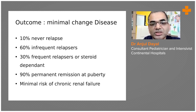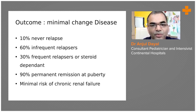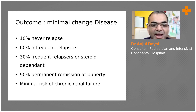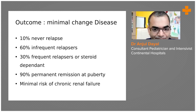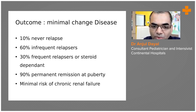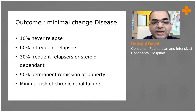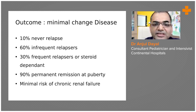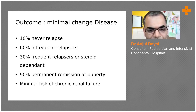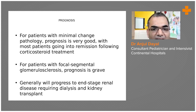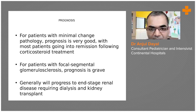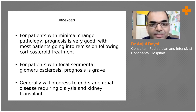Thirty percent of children develop frequent relapse or steroid dependency. Overall, the outcome of minimal change disease is very good — 90 percent of children remain in remission at puberty, with very minimal risk of progressing to chronic renal failure.